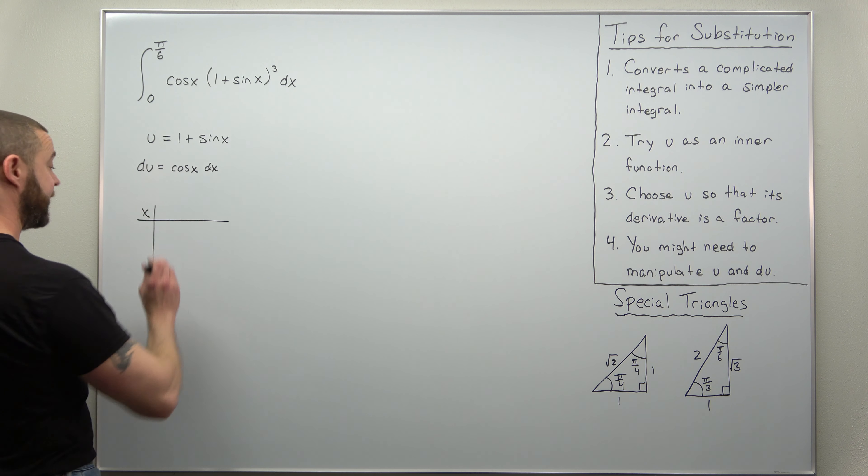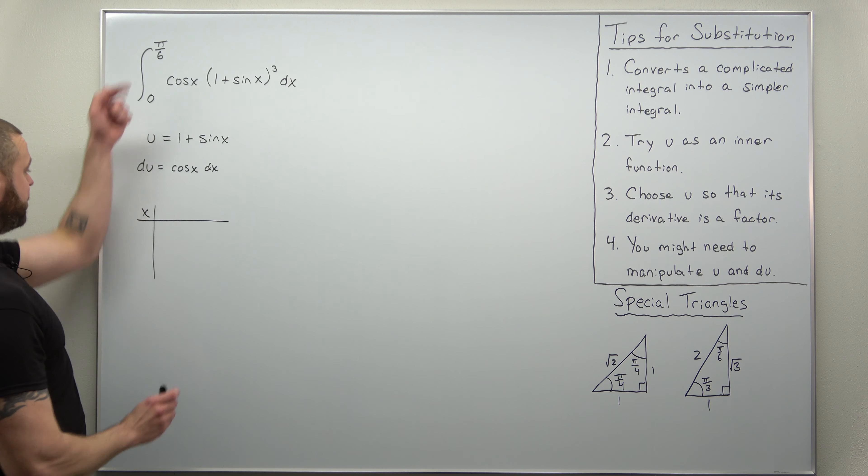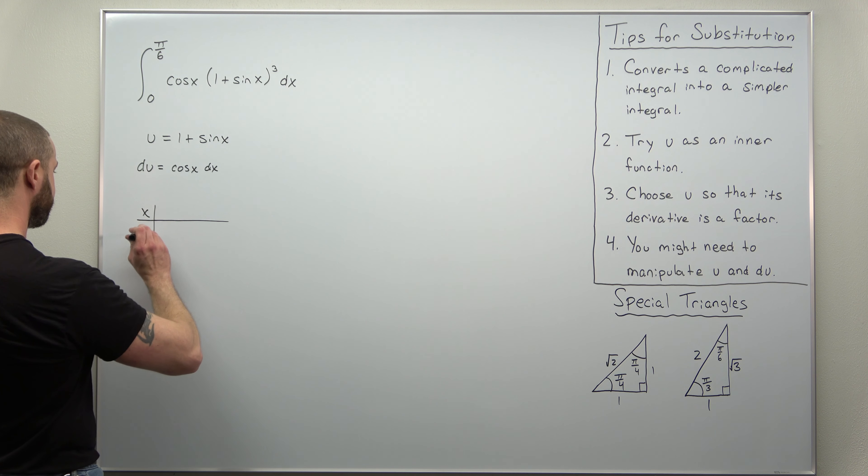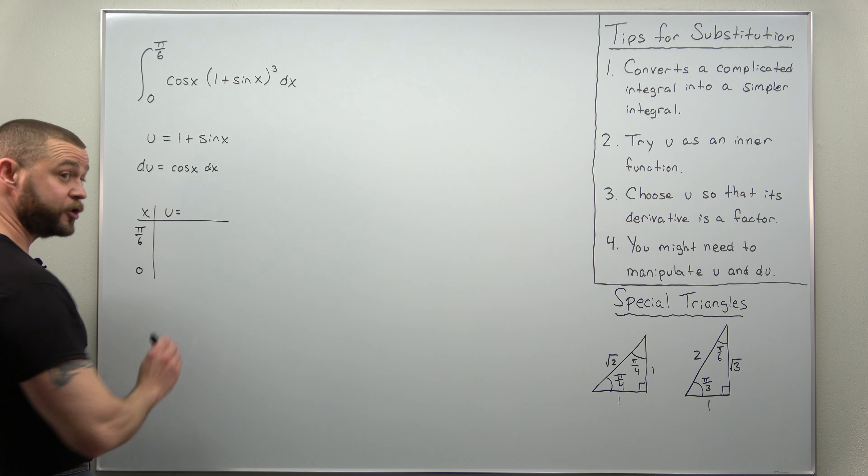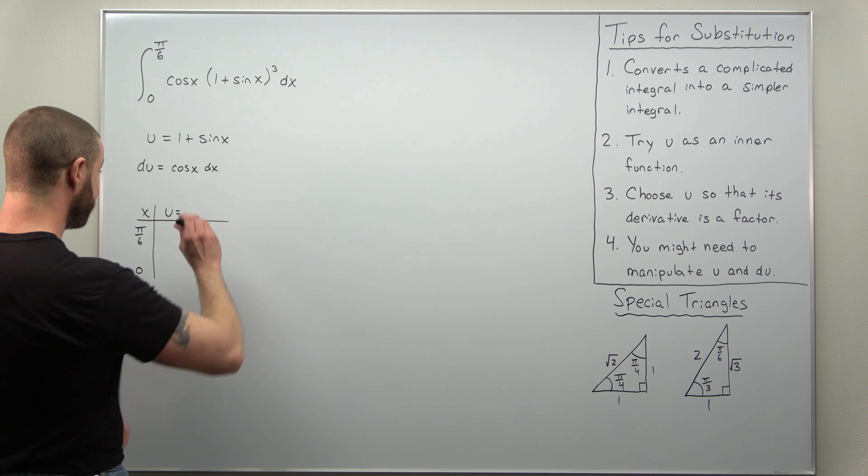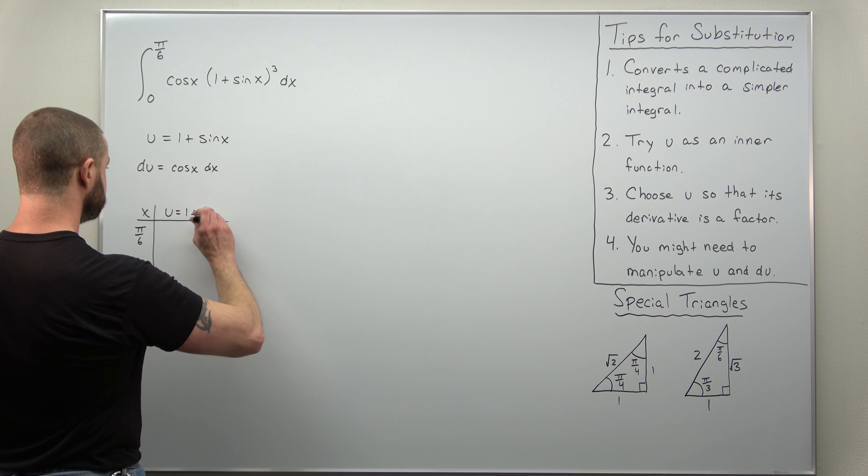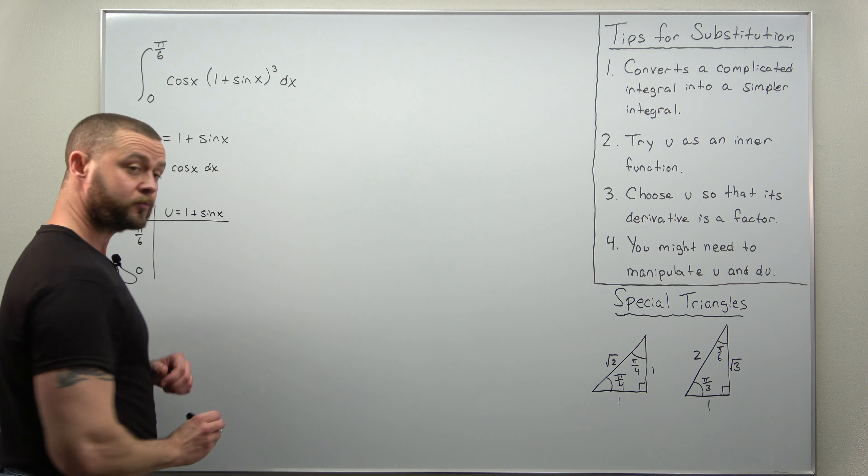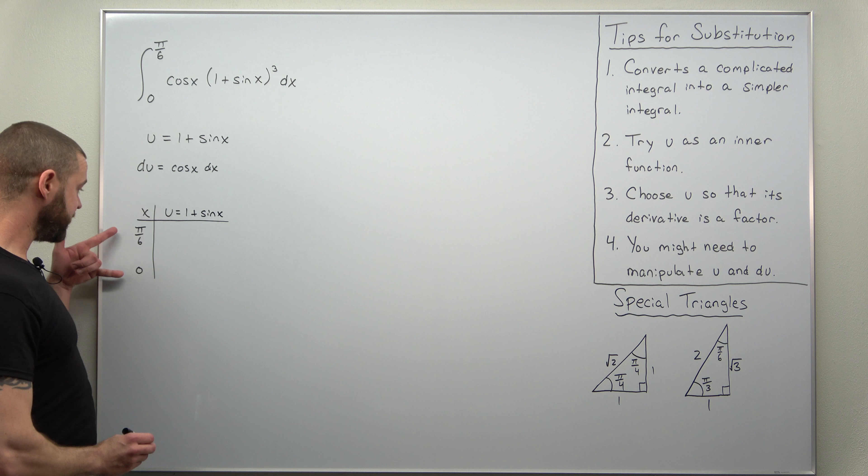So we have x limits from 0 to π over 6, and our substitution that we chose was u as 1 plus sine of x. All we need to do now is plug in these values for x to get our new values for the limits in terms of u.